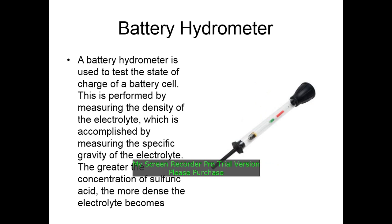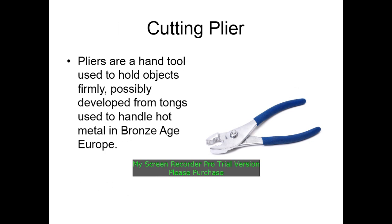A battery hydrometer is used to test the state of charge of a battery cell. This is performed by measuring the density of the electrolyte, which is determined by measuring the specific gravity of the electrolyte. The greater the concentration of sulfuric acid, the more dense the electrolyte becomes.